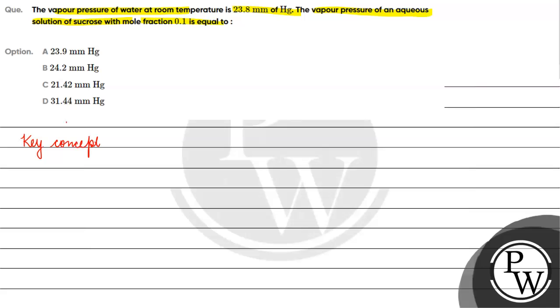The key concept for this question is relative lowering in vapor pressure. This is a colligative property - it depends on the number of particles, not the nature of particles.